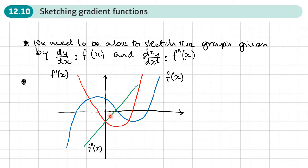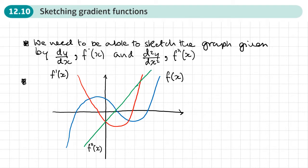I've added the green line, which is the graph of the second derivative — you can think of it as the gradient of the gradient, i.e., what's happening with the gradient of the red line. Here we can see it's a straight line. When the red graph is decreasing, the second derivative is below the axis. Where the gradient of the red line is zero, the second derivative is zero. As the first derivative increases, the second derivative is above the axis.